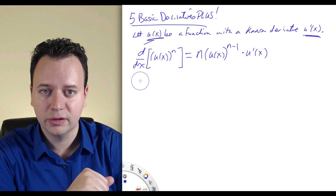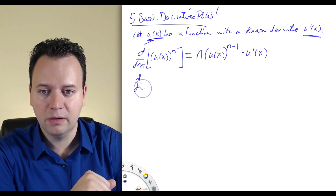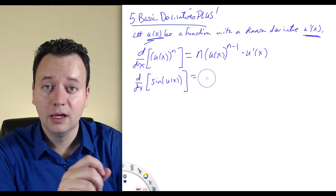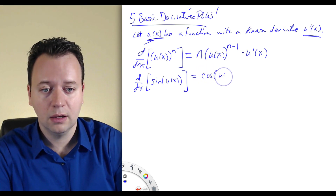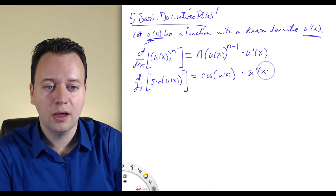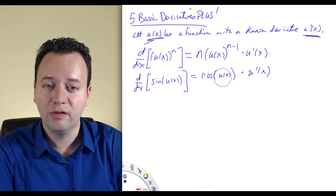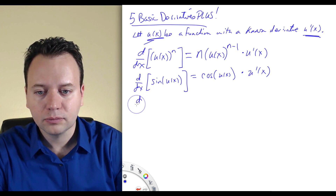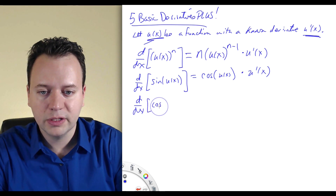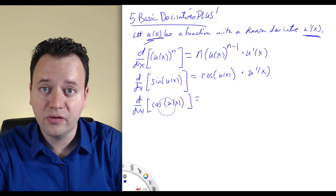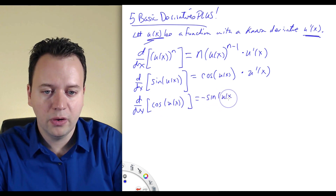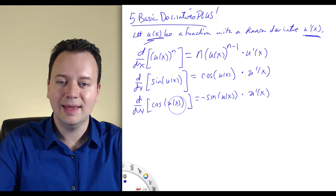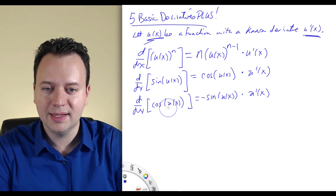The derivative of sine of u of x — the derivative of sine is cosine, so we get cosine of u of x, and then we multiply by u prime of x, because we're taking the derivative with respect to x, not u. The derivative of cosine of u of x — the derivative of cosine is minus sine, so we get minus sine of u of x, times u prime of x. We just multiply by the derivative of that inside function. This u of x is also known as the inside function.